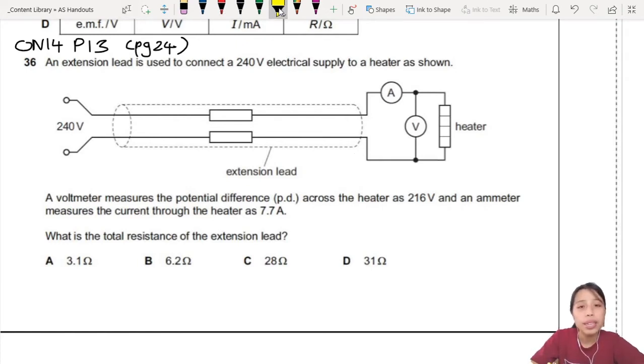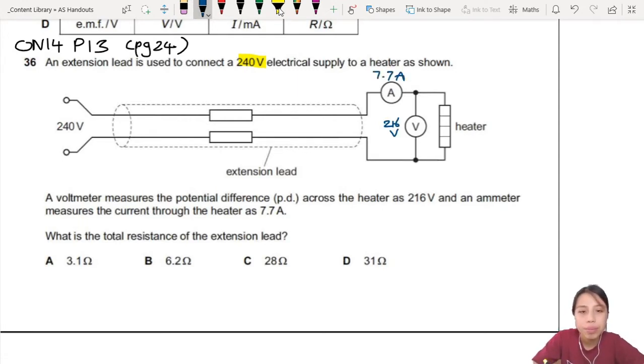An extension lead is connected to an electrical supply to a heater. A voltmeter measures the potential difference across the heater as 216 volts, and an ammeter measures the current as 7.7 amps. What is the total resistance of the extension lead?